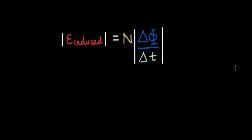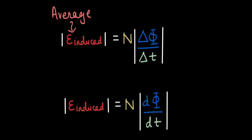This equation gives us the average induced EMF, because we are calculating the EMF over a period of time delta t — which could be two, three, or four seconds. There is also instantaneous EMF, given by d phi by dt, which is the EMF at any one particular instant in time. In this video, we will only focus on average induced EMF, and let's look at a couple of examples.